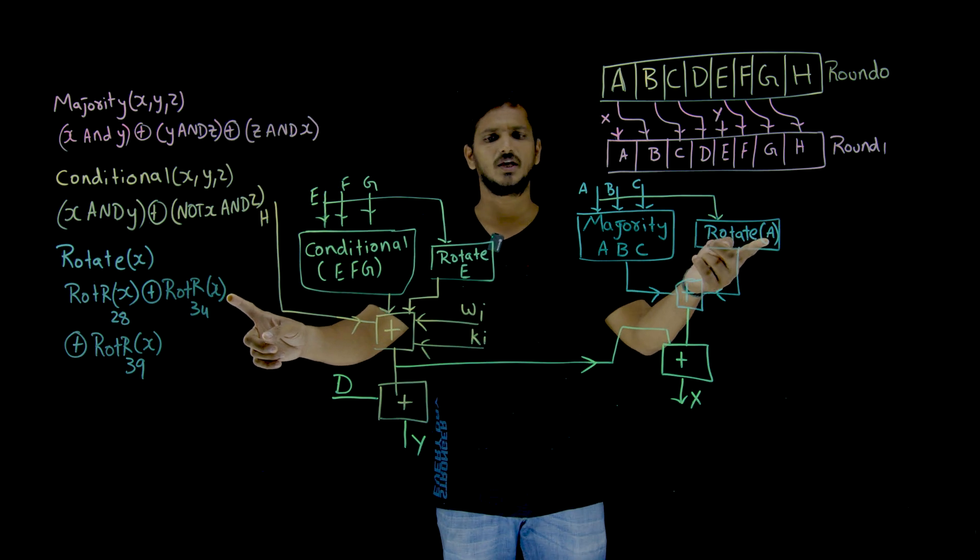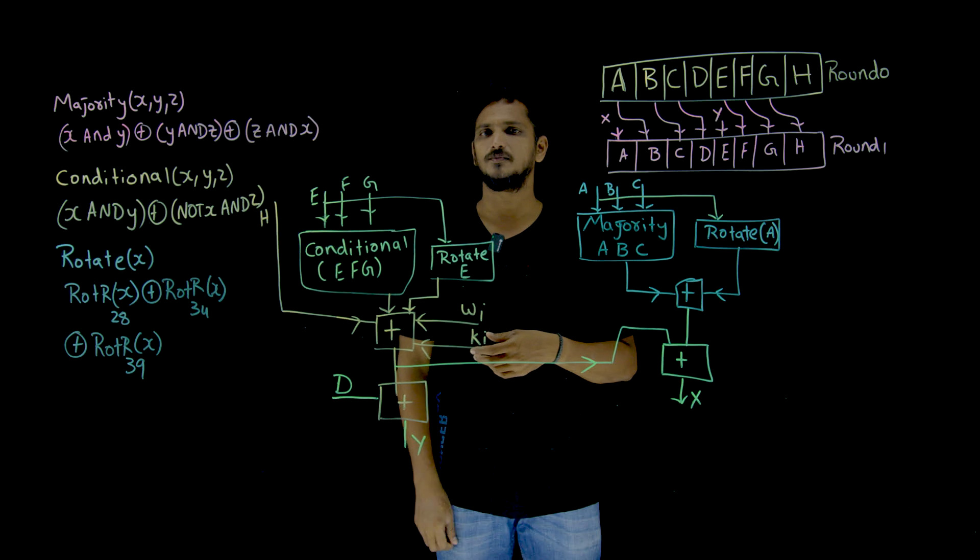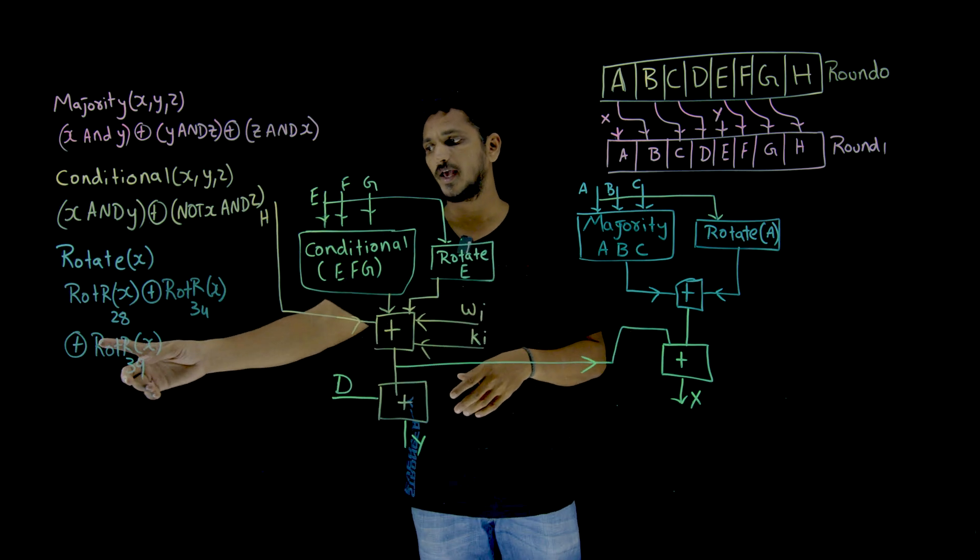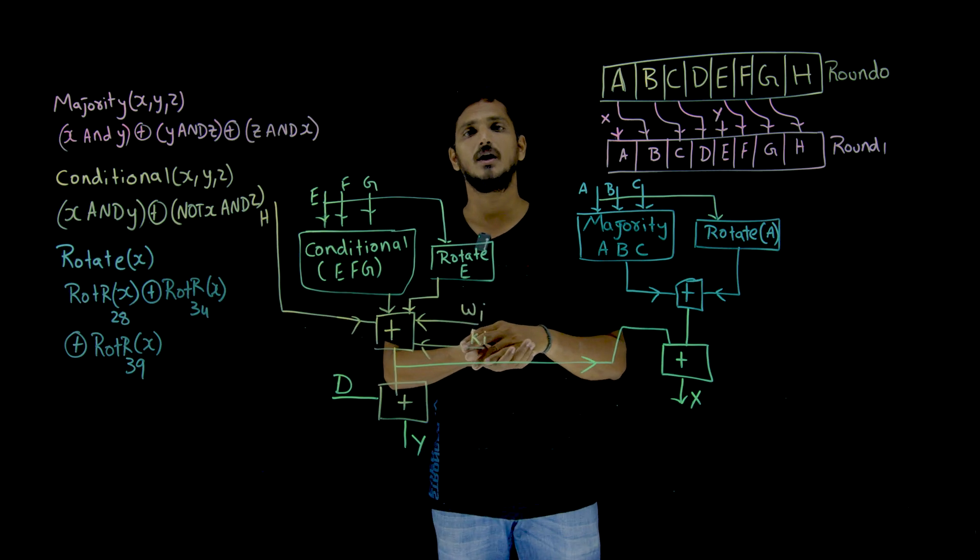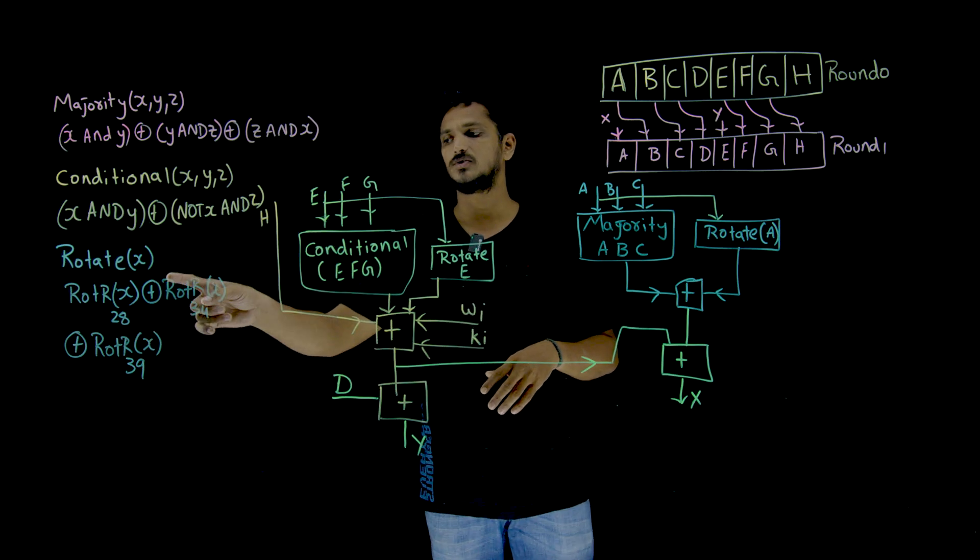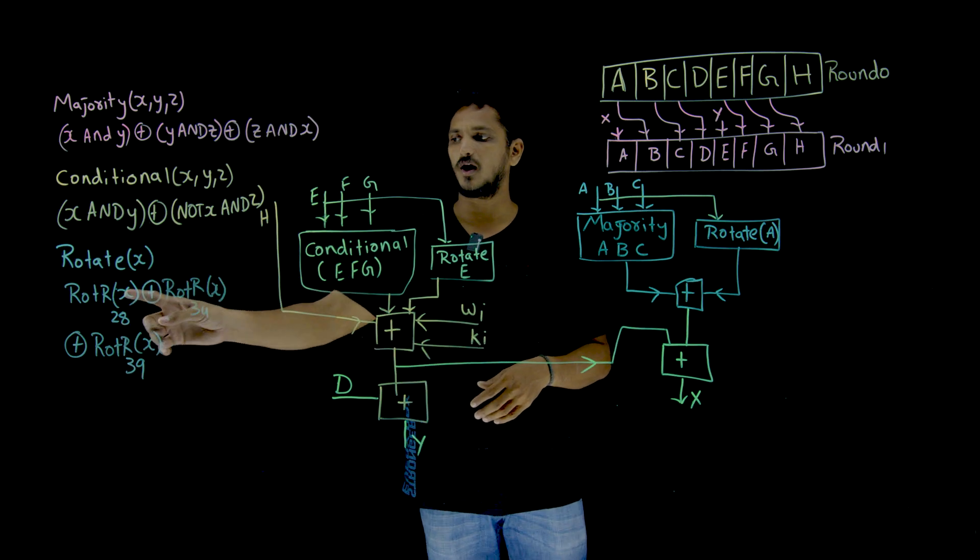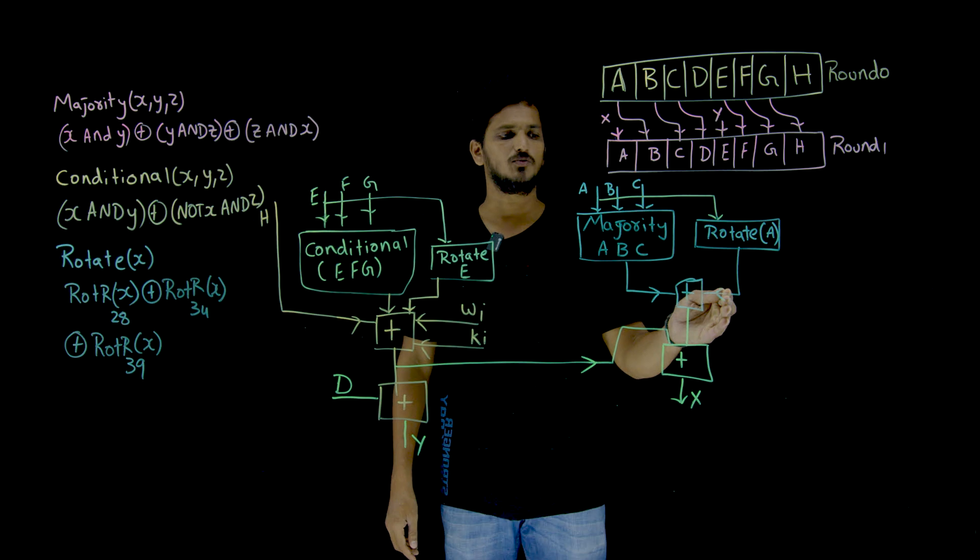Here X means you can take A or E, whatever, wherever you are going to use, we take that X value. 34 bits right rotation, circular right rotation and XOR with circular right rotation 39 bits of X. All these values are XORed. The final output which we got after doing exclusive OR, which we take as output here.